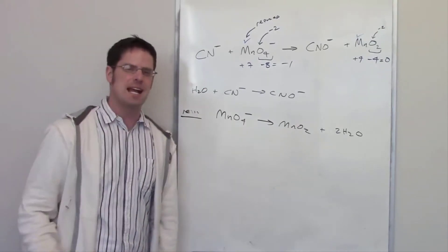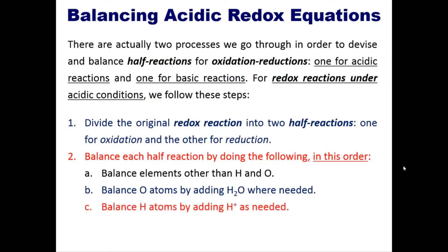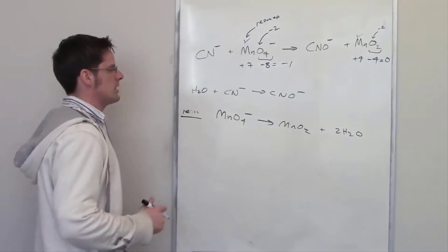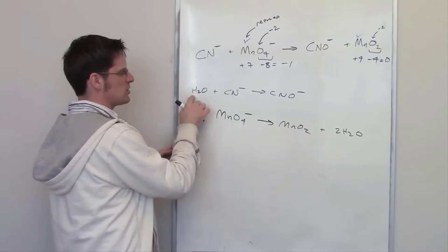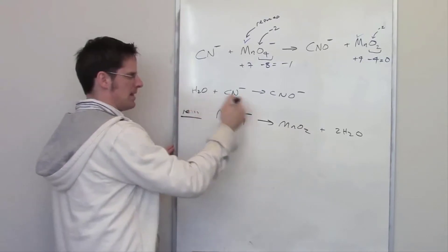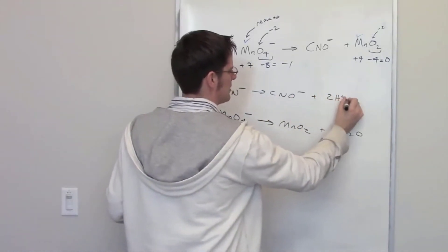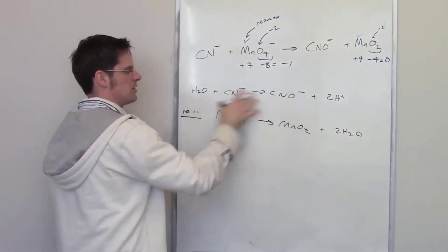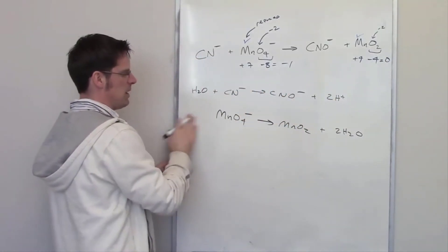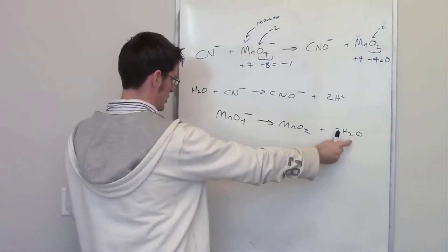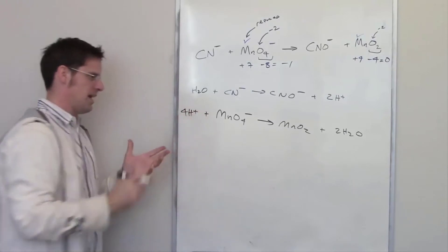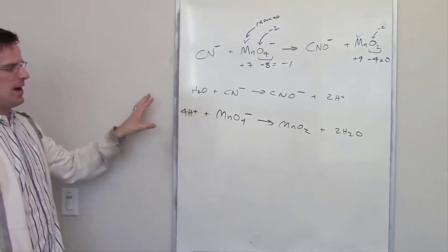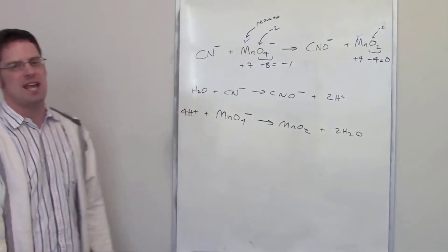The next step says balance hydrogen atoms by adding H⁺ as needed. Because I added H₂O, I've introduced hydrogens. In the reduction half reaction, I've got four hydrogens from the two water molecules on the right, so I add four H⁺ to the left. In the oxidation half reaction, I've got two hydrogens on the left from the water, so I add two H⁺ to the right. Now hydrogen atoms are balanced in both half reactions.